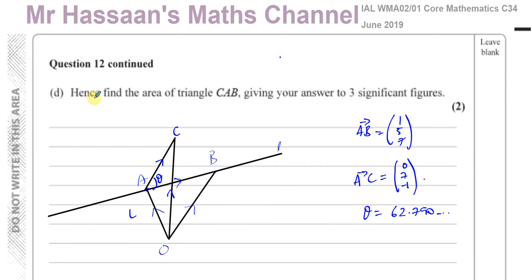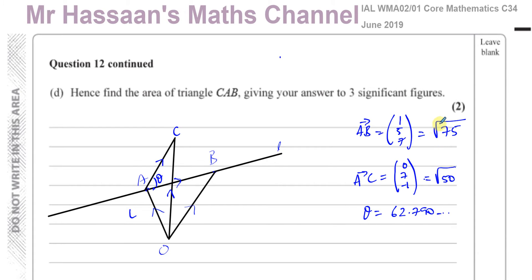The question says hence find the area of triangle CAB, giving answers to three significant figures. So what we've done already is we found the angle theta between AC and AB. We know the vector from A to B, and we also know its magnitude was root 75. The magnitude of AC was root 50. So we know the magnitudes of these vectors.